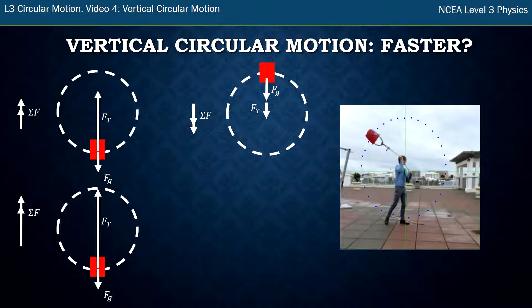So in order to get my total force to be bigger I need a bigger tension force than my original diagram. And the same when it's at the top the total force points downwards, it's now a bigger total force. Gravity hasn't changed so I need a larger tension force pointing downwards in order to make my total force larger.